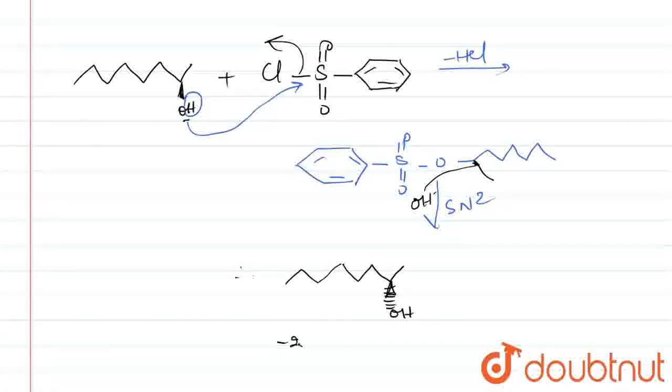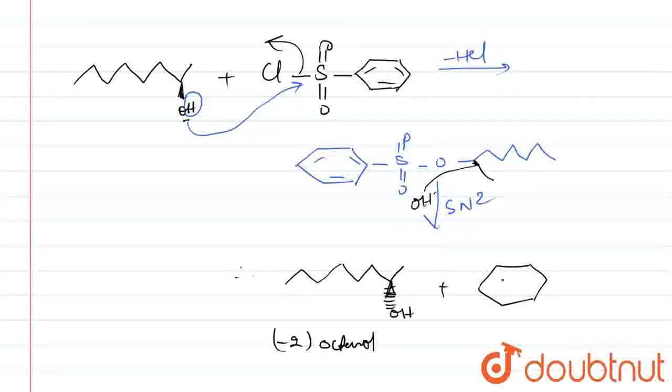this will go outside. So this is OH, we can write that it is minus 2 octanol as product, and plus we are having, plus we are having this. So it should be the required product that we get.